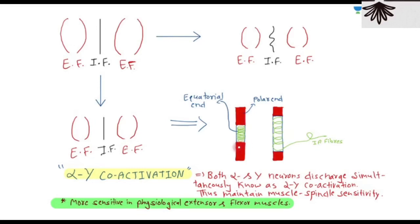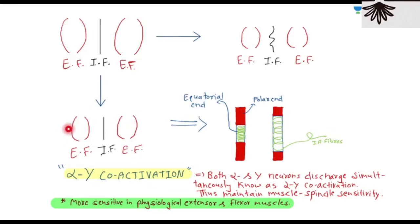When gamma fibers fire, the polar contractile ends shorten and the equatorial non-contractile region is stretched, causing the sensory fibers to fire and alpha motor neurons to activate — completing the alpha-gamma coactivation loop.